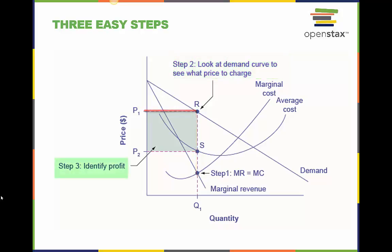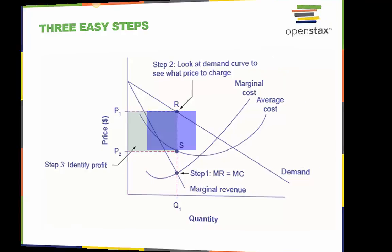In step 3, the monopoly identifies its profit. Total revenue will be Q1, quantity 1, multiplied by P1, price 1. Total cost will be Q1 multiplied by the average cost for producing Q1, which is shown by point S on the average cost curve, to be P2. Profits will be the total revenue rectangle minus the total cost rectangle, shown by the shaded zone in the figure.